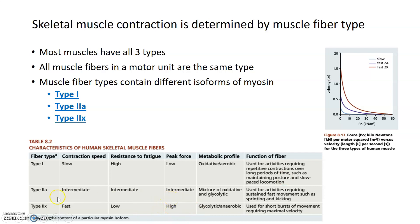The fast-twitch type 2 fibers, which contract faster and generate more force, rely much more heavily on glycolysis for ATP generation. Glycolysis happens quickly, but it only generates about 2 ATP — compared with the 36 to 38 ATP from aerobic respiration. You can see why these muscle fibers fatigue faster: they're not generating as much ATP. But they can respond quickly because glycolysis operates in a much faster time frame than aerobic respiration.